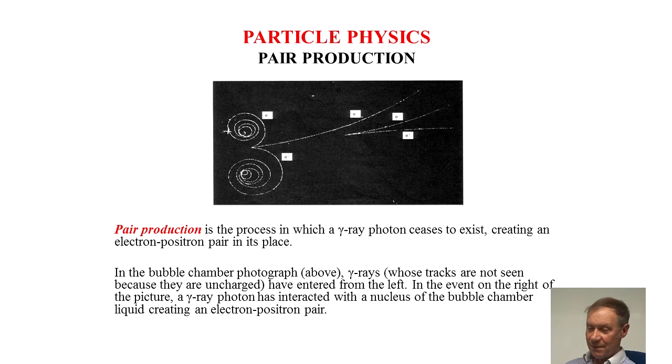In the case of pair production, this is a process in which a gamma ray photon ceases to exist, creating an electron-positron pair in its place.